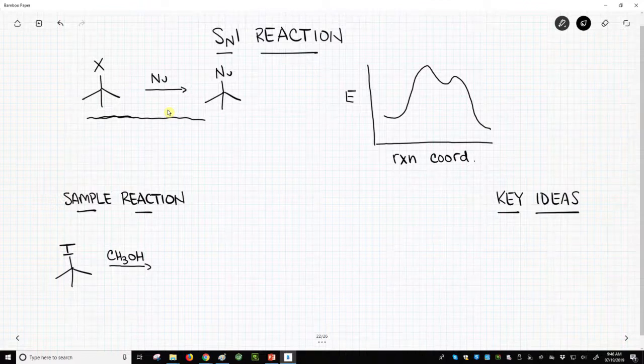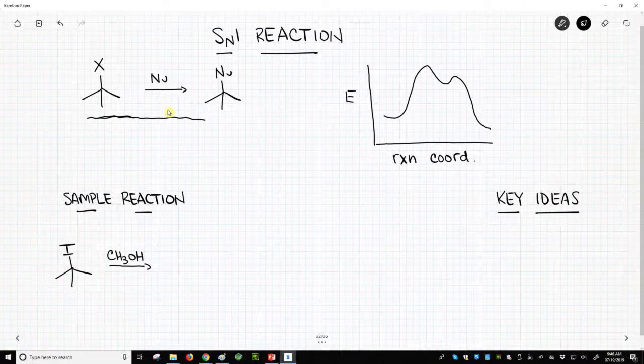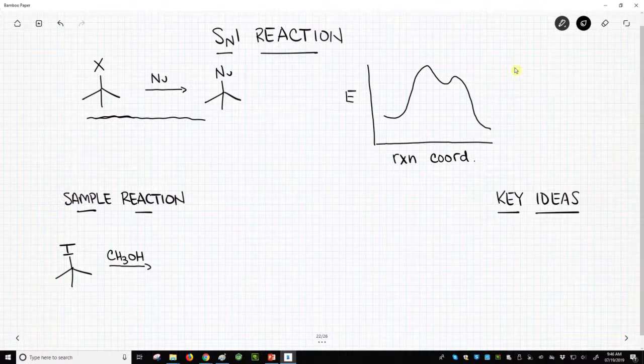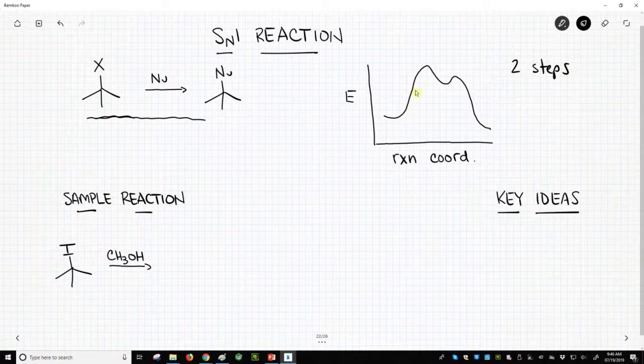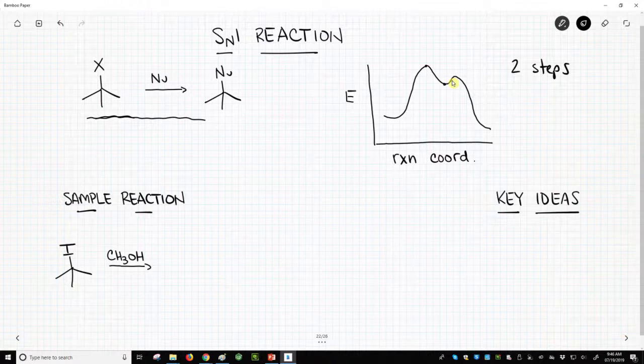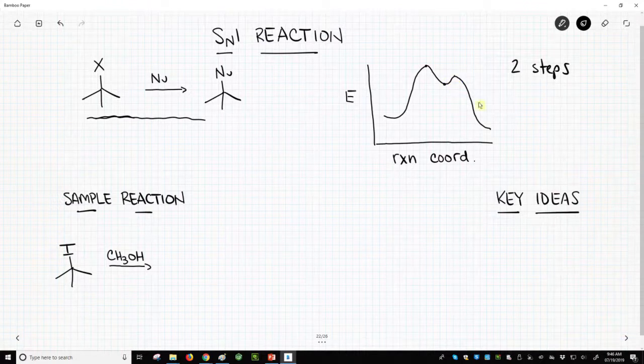So let's see what the energy diagram looks like. That's on the right. There's something different about this energy diagram. We see that there are actually two steps in the reaction. The curve goes up to one transition state, comes down to an intermediate, and then goes up to another transition state before going to the product.